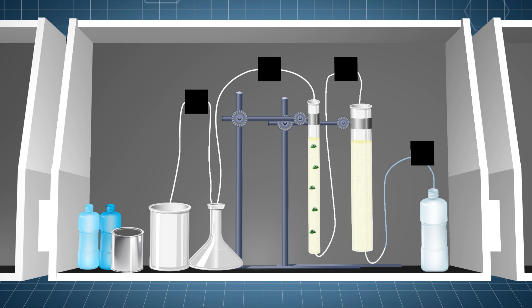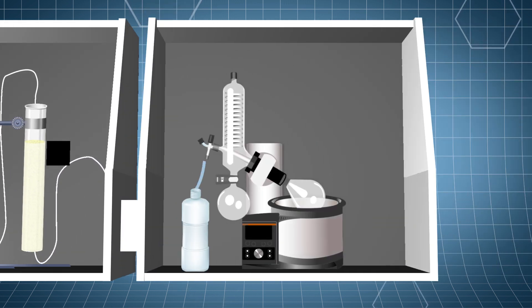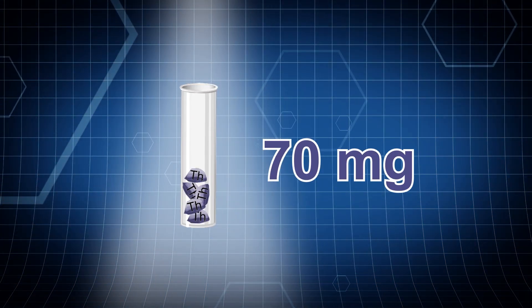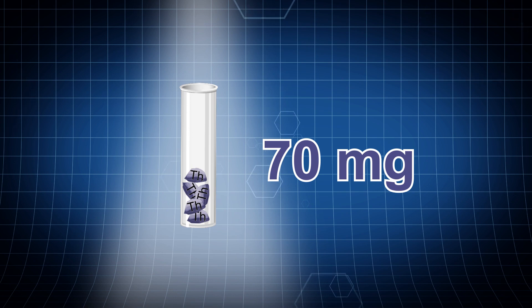The nitric acid and thorium solution is put into a thorium product bottle and run through an evaporator held over a water bath. The nitric acid evaporates away, leaving just the thorium left in the container. Now we have our final product, about 70 milligrams of thorium ready to be shipped out to revolutionize the fight against cancer.